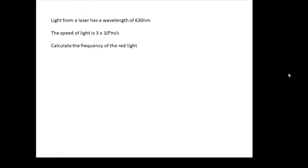Here's an example. Light from a laser has a wavelength of 630 nanometers — that little 'n' isn't a typo, it's meant to be there: nanometers. The speed of light is 3 times 10 to the 8 meters per second. Calculate the frequency of the light.